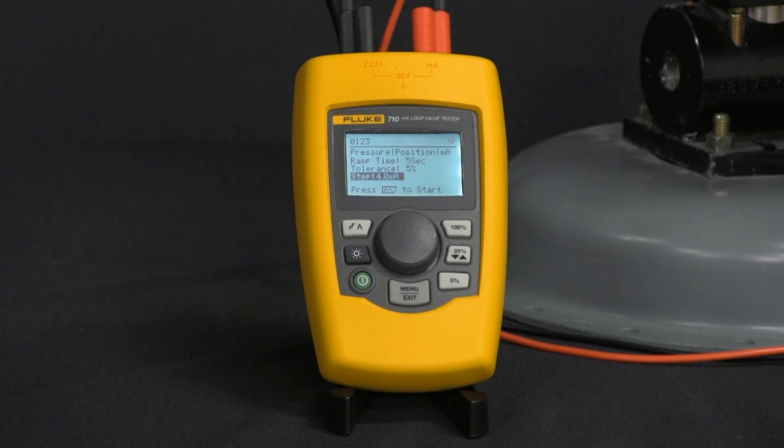Okay, from here we can set our ramp time, tolerance, and step milliamp value. Right now we have it set for five seconds ramp time, tolerance of five percent, and step is going to be four milliamps.